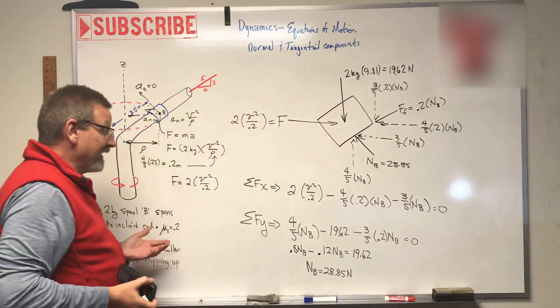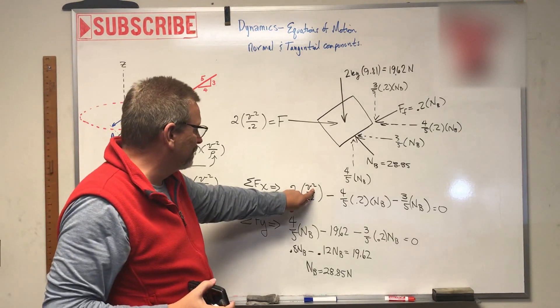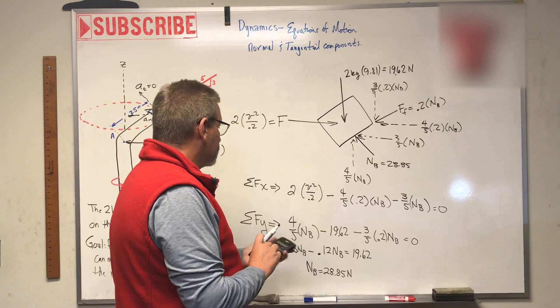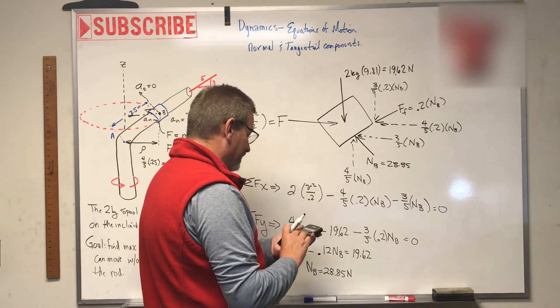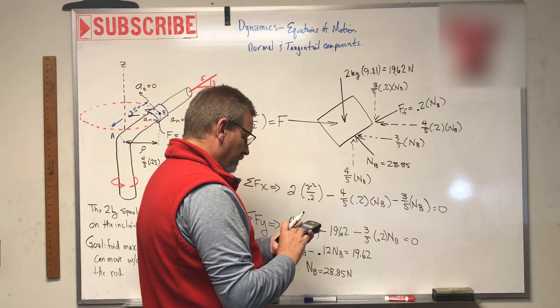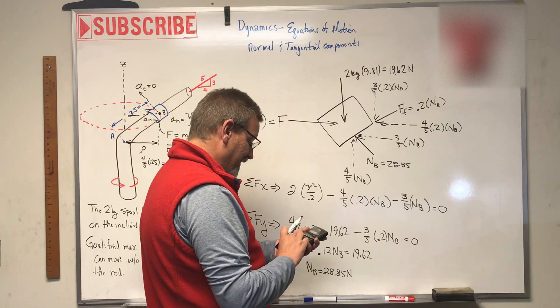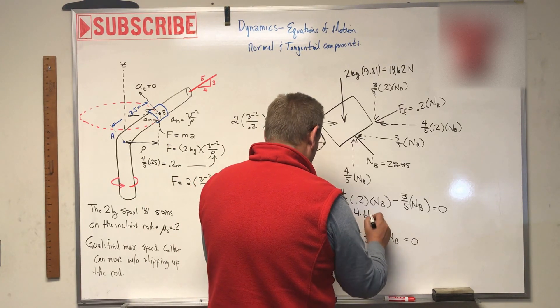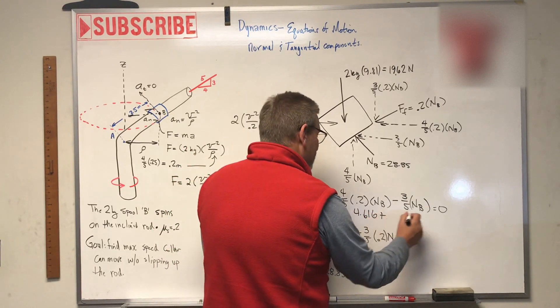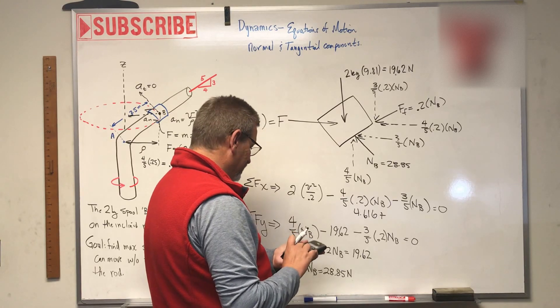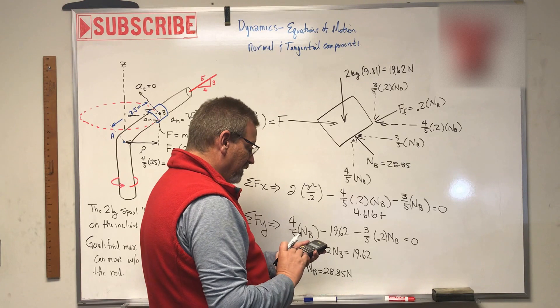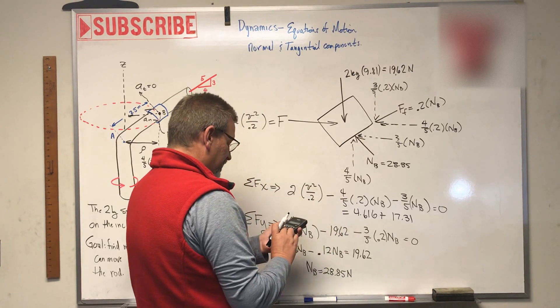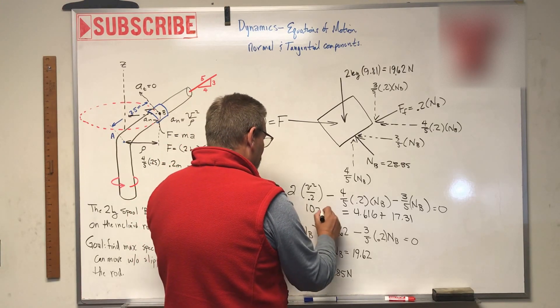Now, what are we looking for? We're looking for V. Oh, here we go. Here's V. Oh, look at this. Now we know NB. So I'm going to move these two guys to the other side. So number one, 0.8 times 0.2 equals 0.16 times 28.85 equals 4.616. Plus this guy over here, which is 0.6 times 28.85, that's 17.31. And all of that is going to be equal to this right here, which is 2 divided by 0.2 is 10, 10 V squared.